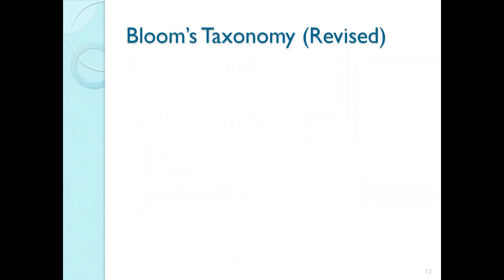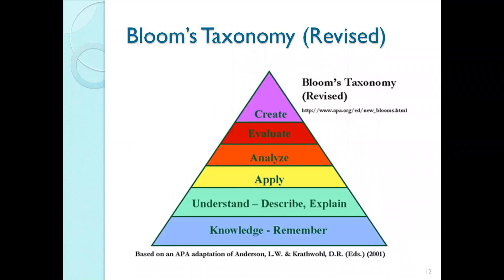Let's talk about Bloom's Taxonomy — the revised version. At the bottom of the pyramid is the knowledge or Remember stage — low level of understanding, just recall. 'The capital of California is Sacramento.' That's the lowest level, DOK1. Understanding means being able to describe and explain. 'Tell me about Sacramento. Why do you think people settled there?' Because of access to the river, the delta, San Francisco during the Gold Rush — now there's a deeper level of understanding.